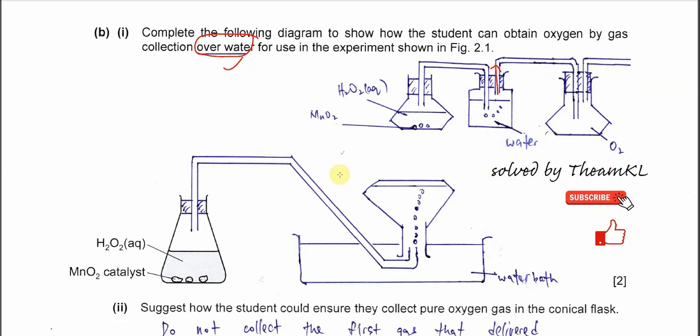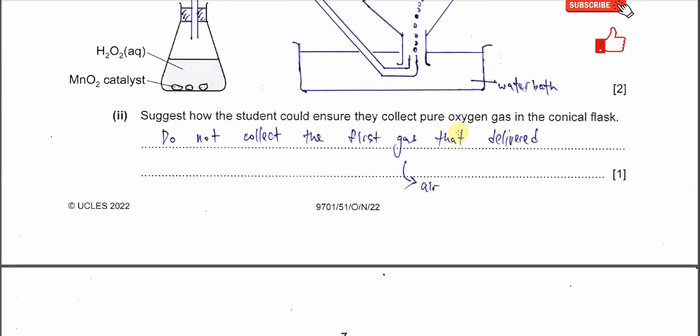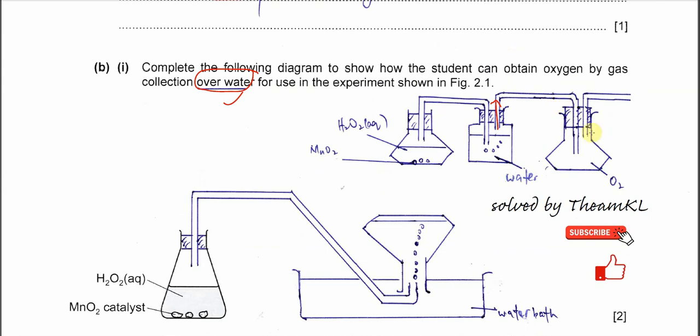This one is from the mark scheme. If we want to make sure the oxygen gas is pure and fully filled in this conical flask, we just let the reaction mixture react for a longer time. So the gas inside this conical flask is confirmed to be pure oxygen gas.